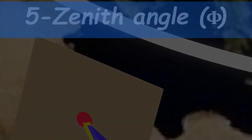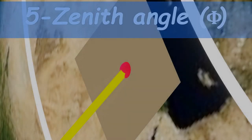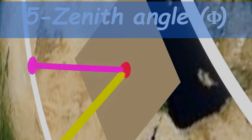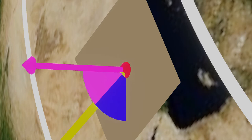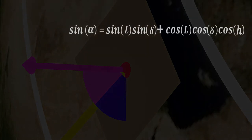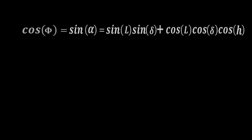Next, the zenith angle. It is the angle between the normal to the ground and the sun ray — in other words, it is the complementary angle of the altitude angle, which means their sum equals 90 degrees. Because these two angles are complementary, the sine of the first angle equals the cosine of the second angle.